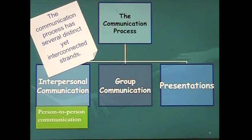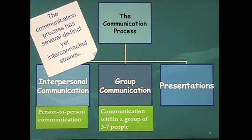Interpersonal communication is person-to-person communication — you communicating with any other person, whether it be a friend, classmate, teacher, or co-worker. Group communication is communication within a group of three to seven people. You may experience group communication in class when working in groups, in clubs or organizations, or even with your family if it's made up of three to seven people.